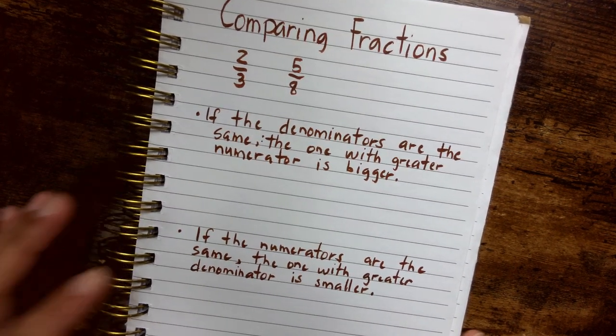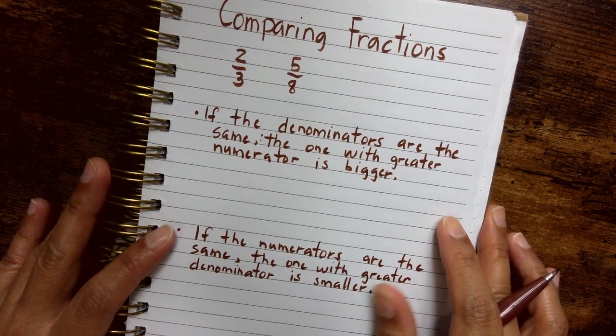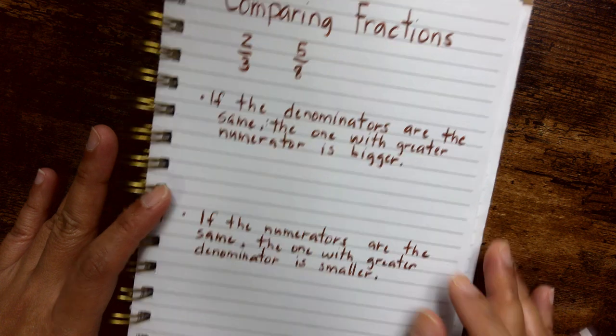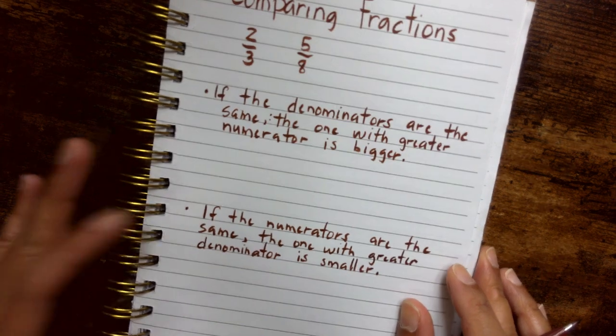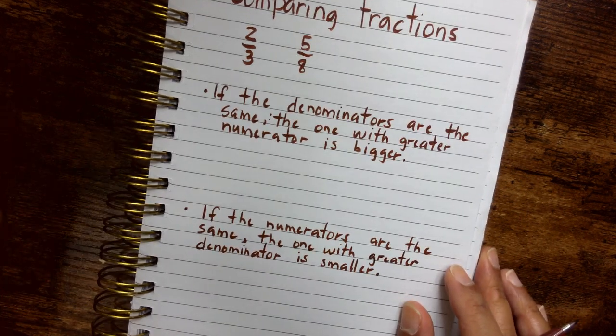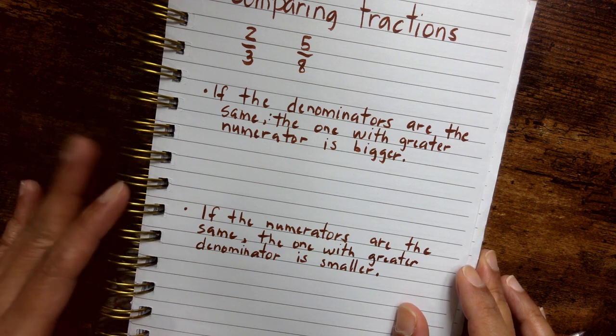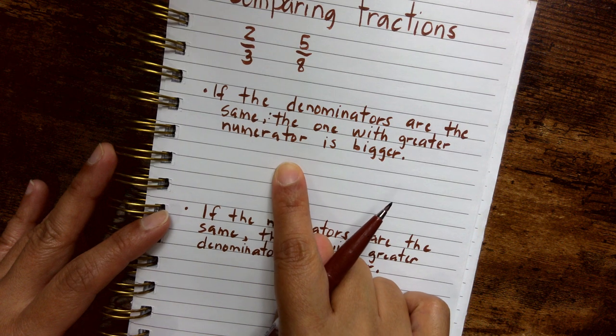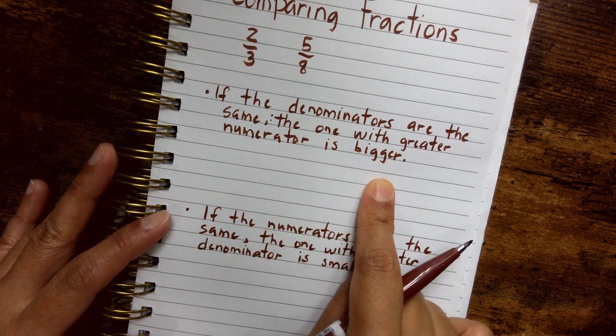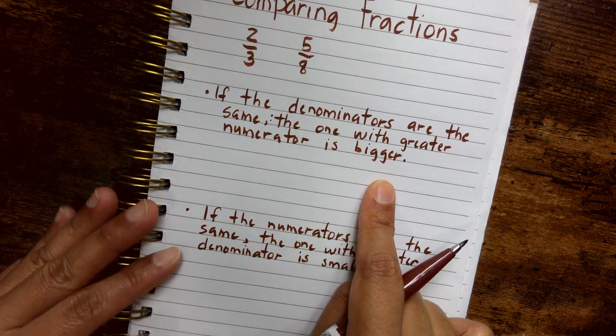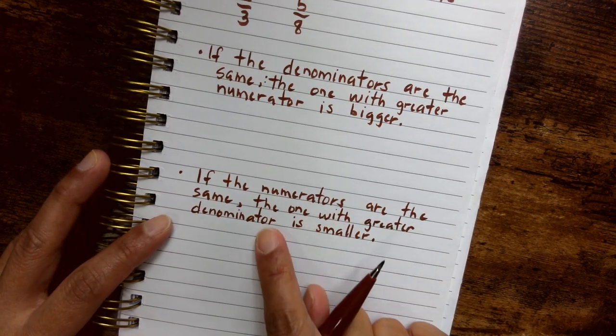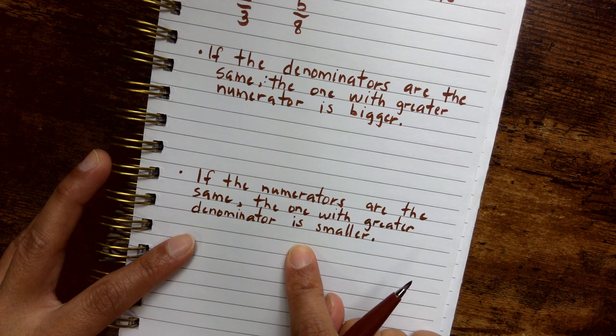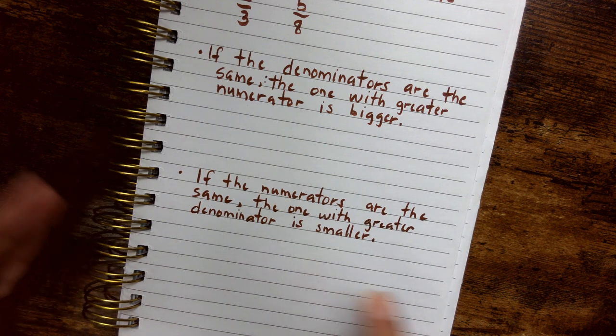Now remember in my other two videos I showed you how to compare fractions with the same denominators and how to compare fractions with the same numerators. In the examples presented in those videos, we learned that if the denominators are the same, the one with the greater numerator is bigger. And if the numerators are the same, the one with the greater denominator is actually the fraction that is smaller in size.